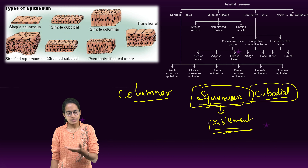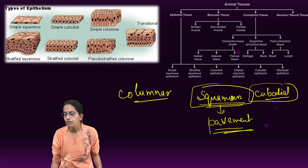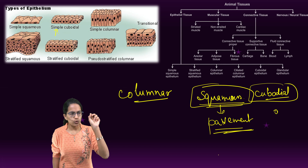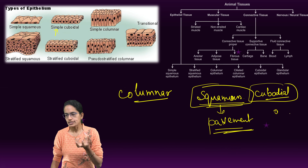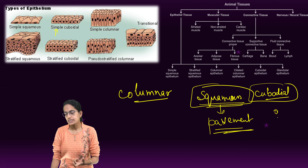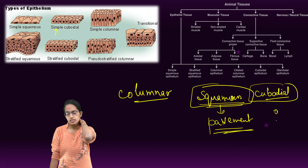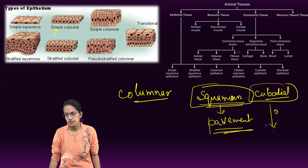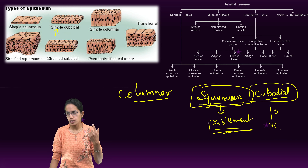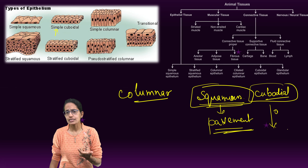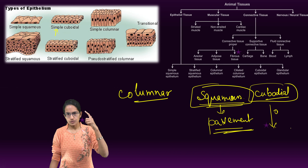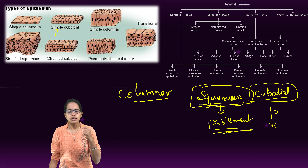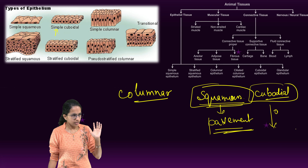Next is cuboidal epithelium. As the name suggests, these are cubical structures — they could also be polygonal or hexagonal in nature. They have a nucleus present in the center, which is a classic characteristic visible in diagrams. The most important functions of cuboidal epithelial cells are excretion, secretion, and gamete formation. Cuboidal cells are present in the germinal epithelium of the gonads and in endocrine systems such as the thyroid and pancreatic glands.